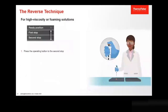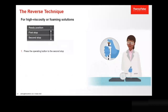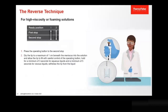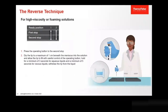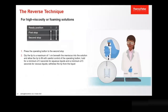The reverse pipetting technique for high viscosity or foaming solutions. Press the operating button to the second stop. Dip the tip to a maximum of one centimetre beneath the meniscus into the solution and allow the tip to fill with careful control of the operating button. Hold for a minimum of three seconds for aqueous liquids and a minimum of five seconds for viscous liquids. Draw the tip from the liquid.